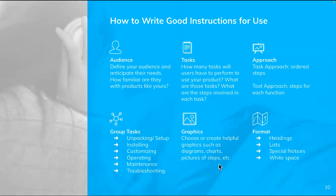For your graphics, you want to create or find helpful graphics such as diagrams, charts, or pictures of steps. Things need to be labeled and clearly related to the text. Once you know your tasks and steps, it's much easier to create or find the graphics you need. With all this information gathered, you can decide on your headings, what lists you need, what special notices you need, and make sure you account for white space.